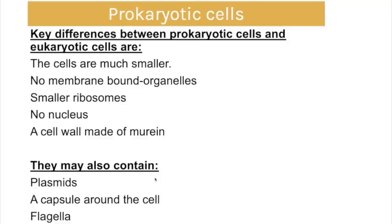Prokaryotic cells such as bacteria differ from eukaryotic cells in several key ways. They are much smaller, have no membrane-bound organelles, and have 70S ribosomes (not membrane-bound). They have no nucleus, so their DNA exists as a single loop free within the cytoplasm. Their cell wall is made of murein. They may also contain plasmids (additional DNA loops), sometimes have a capsule to prevent desiccation and evade the immune system, and sometimes have flagella for movement — though flagella are not always present.